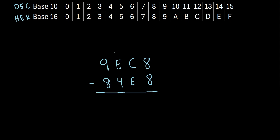Let's try another example. Let's say we have 9EC8 minus 84E8. Starting with the first column: 8 minus 8 is just 0. Next, C minus E — C is equal to 12 and E is equal to 14, so we can't do 12 minus 14. We borrow from the next column, converting the E into D (one less than E in hexadecimal), and we add 16 to this column. So we have C plus 16: 12 plus 16 is 28. Then 28 minus E is 28 minus 14, which is 14. And in the hexadecimal system, E represents 14, so we write an E.